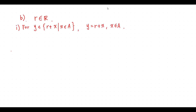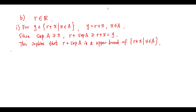For Y in the set {R + x : x ∈ A}, Y equals R plus x for some x in the set A. Since supremum A is greater than or equal to x, R plus supremum A is greater than or equal to Y. This implies R plus supremum A is an upper bound of this set, so R plus supremum A is greater than or equal to supremum of this set.